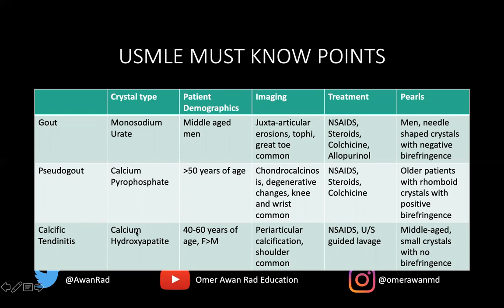Calcific tendinitis, also known as hydroxyapatite deposition disease, involves calcium hydroxyapatite being deposited around joints. Typically middle-aged individuals, females slightly more commonly than males. You're looking for a periarticular globular amorphous calcification adjacent to the shoulder, which is the most common place. On the USMLE, these crystals are very small — much smaller compared to pseudogout and gouty crystals — and there is no birefringence under polarized light for calcific tendinitis.